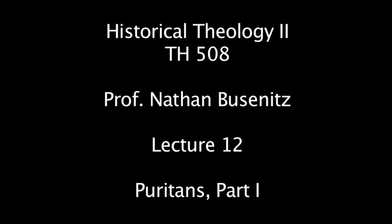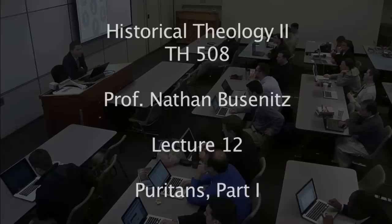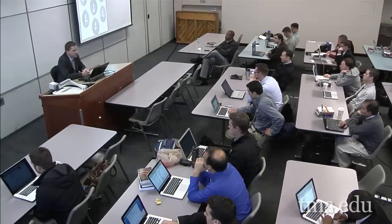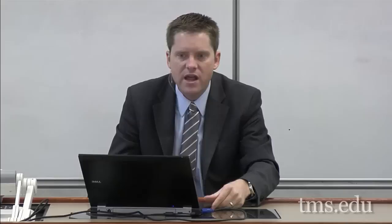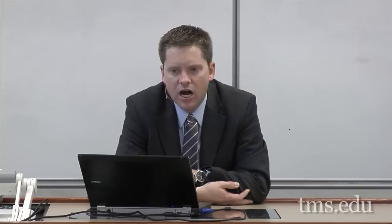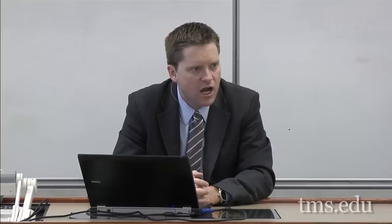We are picking up from the Reformation and moving forward. We're going to spend today and probably a little bit of Thursday talking about the Puritan movement, and then we'll talk about what was happening elsewhere in Europe after the Reformation — what was happening in Germany with the setting in of dead orthodoxy and the rise of the Pietist movement, which eventually produces the Moravian movement. Also in France, the French Protestants are known as the Huguenots, and they had a really violent conflict with French Catholics.